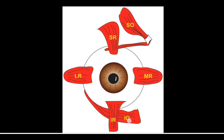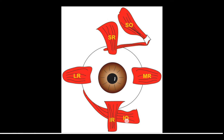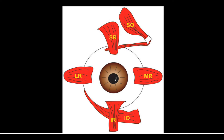The same is true for the inferior oblique. The other muscles — medial rectus, inferior rectus, lateral rectus, and superior rectus — are also seen. So that is how to identify the extraocular muscles from the image.